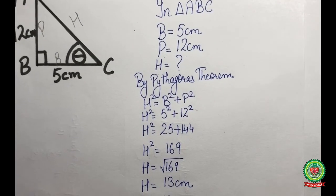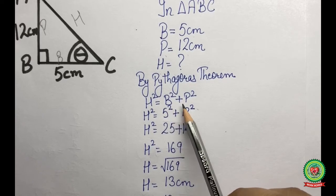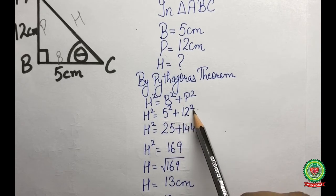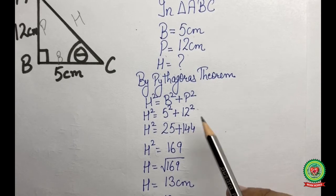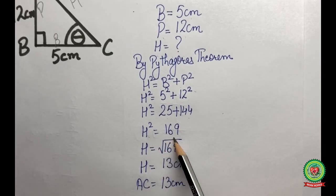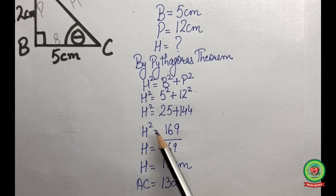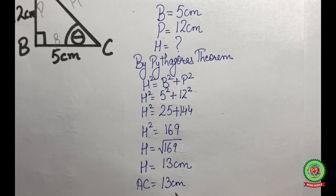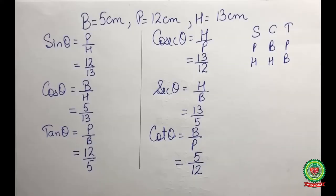We apply the Pythagorean theorem: h² = b² + p². Substituting the values, h² = 5² + 12² = 25 + 144 = 169. Taking the square root, h = √169 = 13 centimeters. Therefore, AC = 13 centimeters. Now that we have all three sides, we can find all six trig ratios.